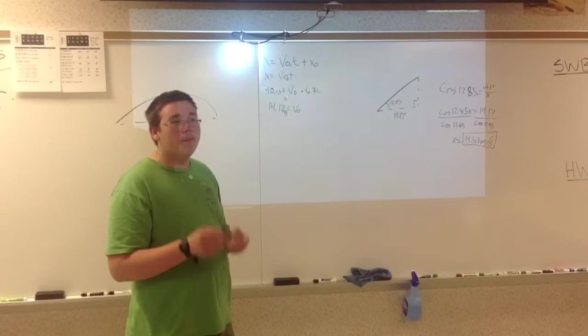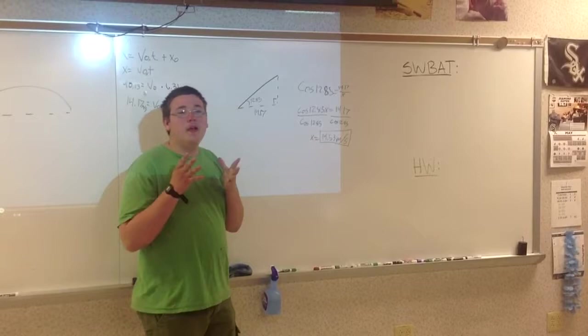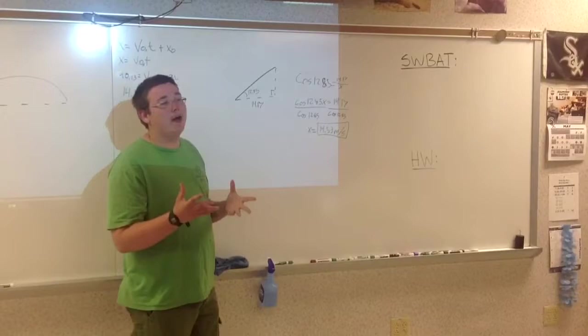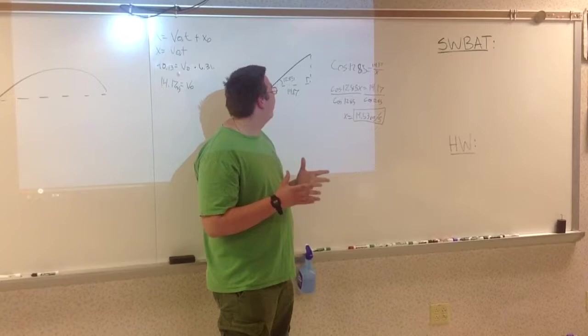But this is only in the x direction. If we look here, we can split up the initial velocity into two components, x and y. Now in order to actually take into account the initial velocity, we need to recombine these two components. Because we have the x, and now we need to find this line here. So, simply we know that cosine 12.85, because 12.85 is the approximate angle.